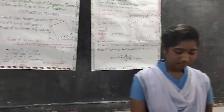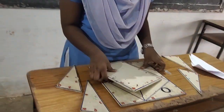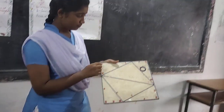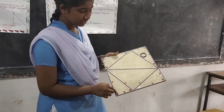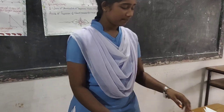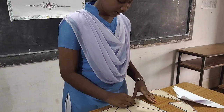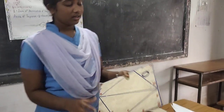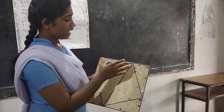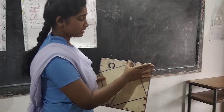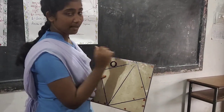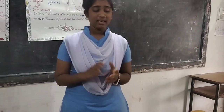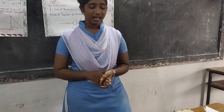Look at this model. I have taken this PQRS square. The length of each side is A plus B — that is A, that is B, that is A plus B. So the area of square PQRS equals (A plus B) squared.